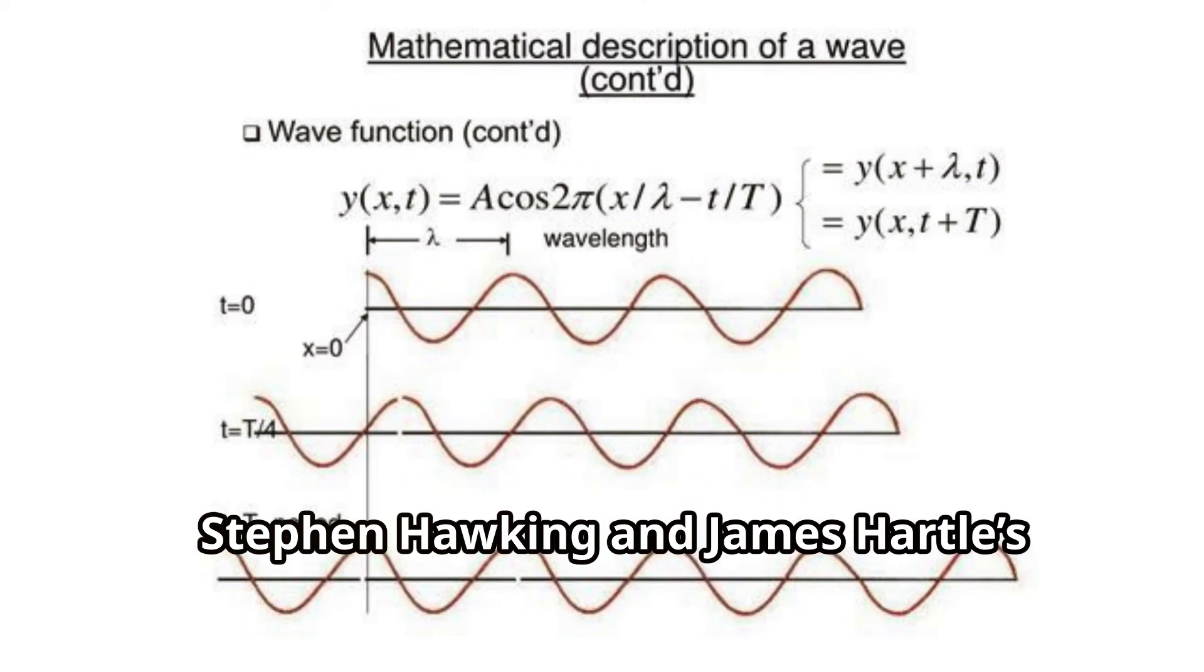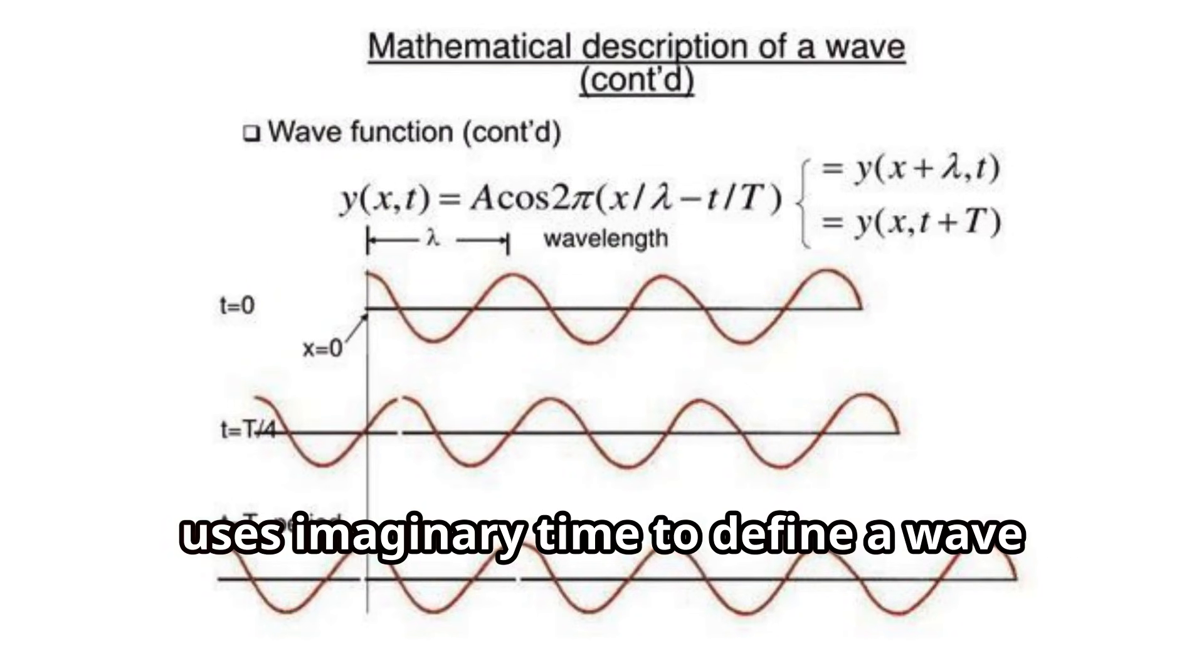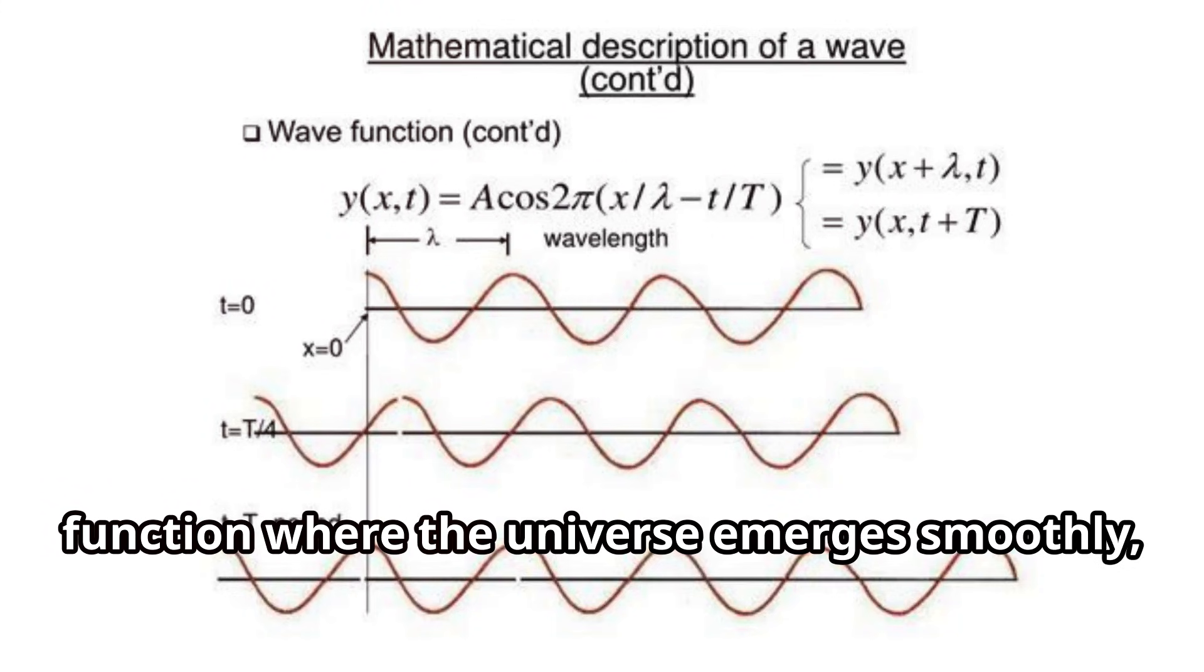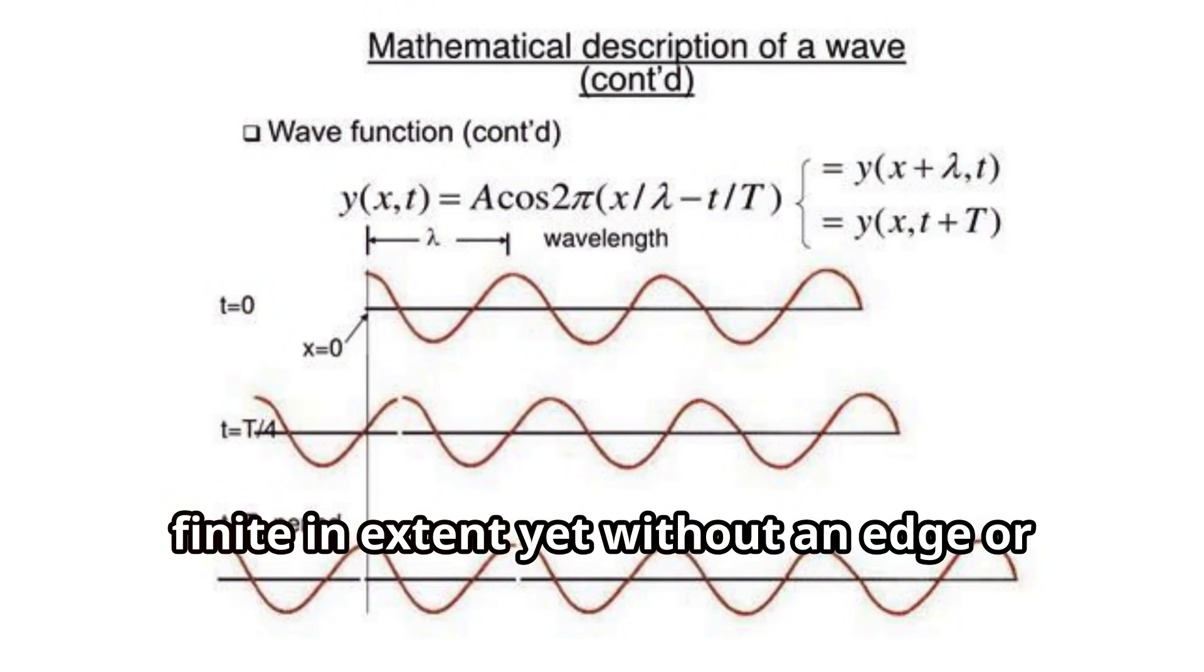Stephen Hawking and James Hartle's 1983 No Boundary proposal uses imaginary time to define a wave function where the universe emerges smoothly, finite in extent, yet without an edge or beginning, like the surface of a sphere.